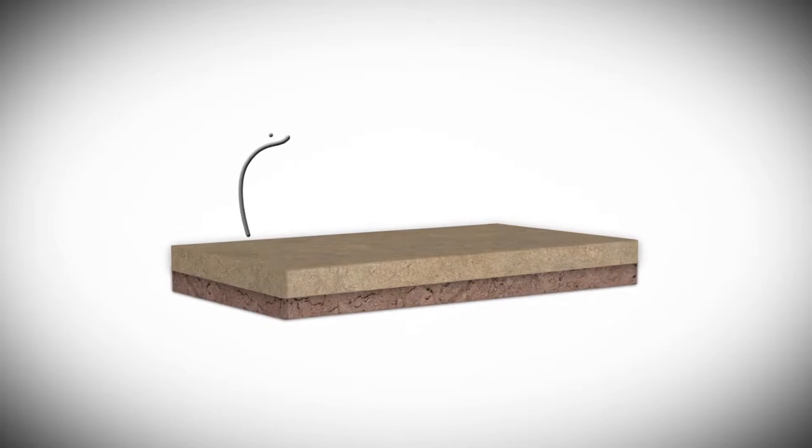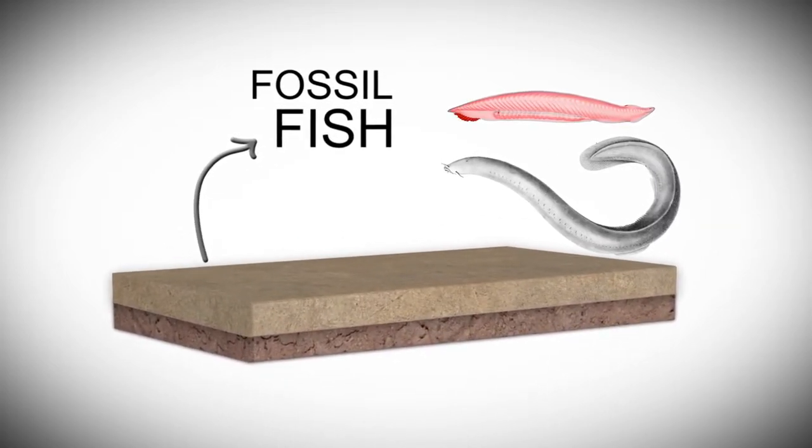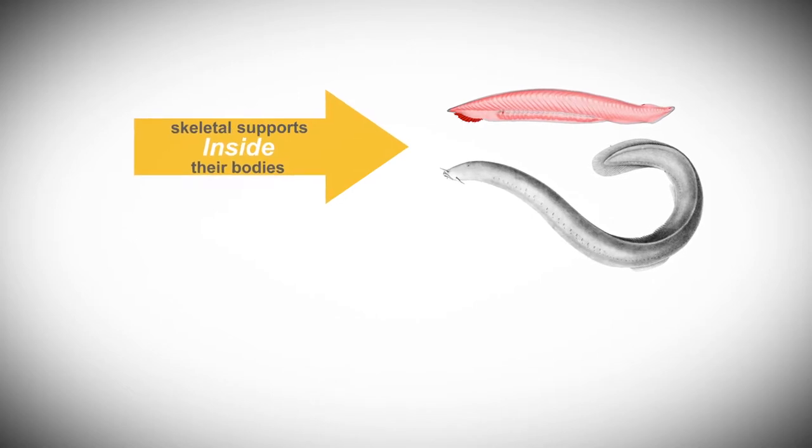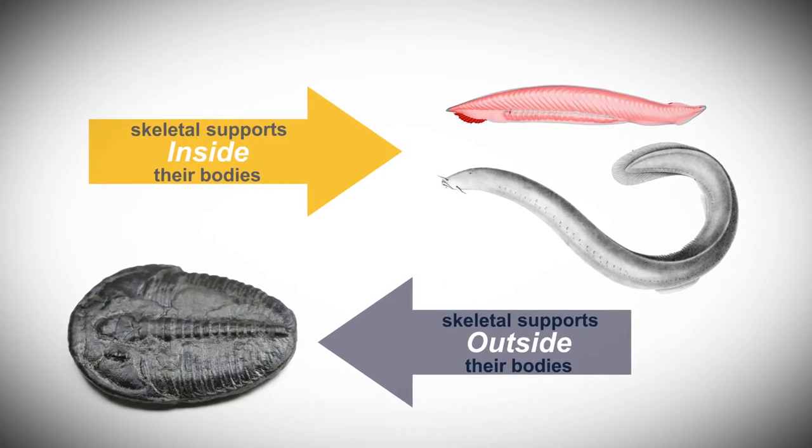Cambrian rocks also contain fossil fish that look like today's lancelets and hagfish. The fish had perfectly crafted skeletal supports inside their bodies, an opposite arrangement from Cambrian arthropods like trilobites.